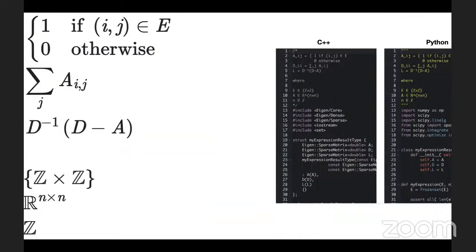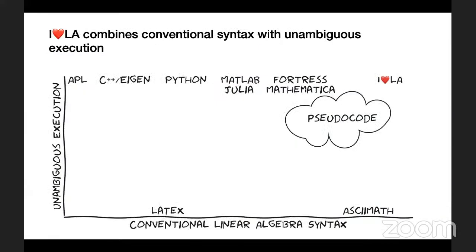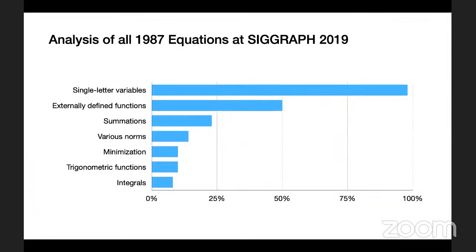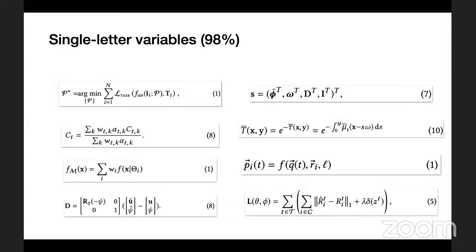There is a difference between how we input linear algebra and the readability of expressions. Existing programming languages can be unambiguously compiled but use syntax quite unlike conventional mathematical notation. Code, while readable, cannot be compiled or validated. AHDA-A combines conventional syntax with unambiguous execution. To motivate design decisions, we analyzed equations from all technical papers published at SIGGRAPH 2019, taking an empirical approach and categorizing all 1,987 equations. Although in programming we use long descriptive variable names, this is almost unheard of in conventionally written math. Single-letter variables prevent ambiguity during multiplication implied by juxtaposition.